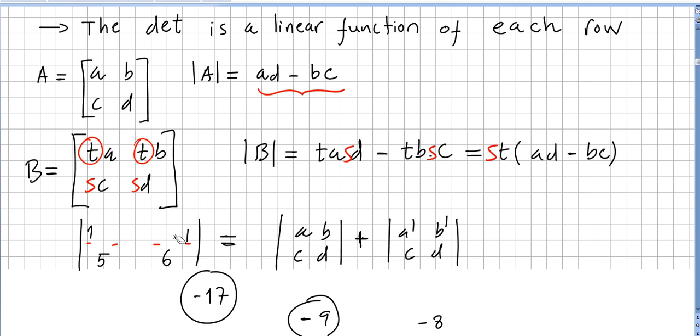So the determinant is a linear function of each row. We saw that for multiplication, if you multiply one row by a scalar, the determinant is multiplied by that scalar.